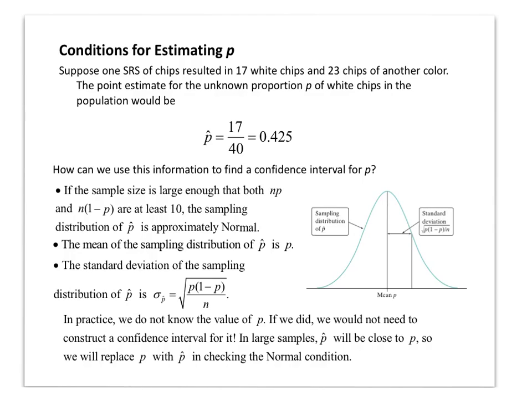Some of the conditions that you need to be aware of at all times when you do confidence intervals is you got to make sure the sample size is large enough so that both the number of successes, which we define as n times p, and the number of failures, which is n times 1 minus p, has to be at least 10. As long as that happens, then our sampling distribution is approximately normal.